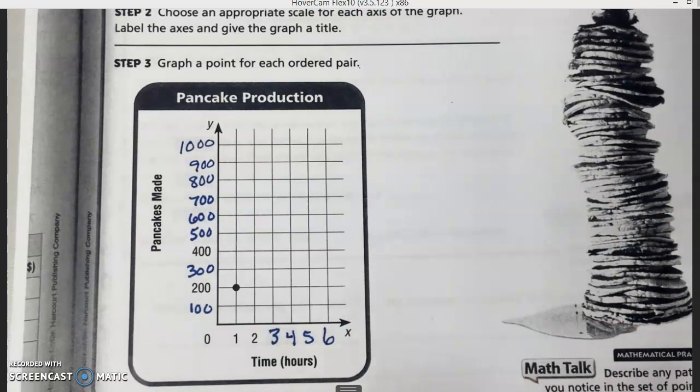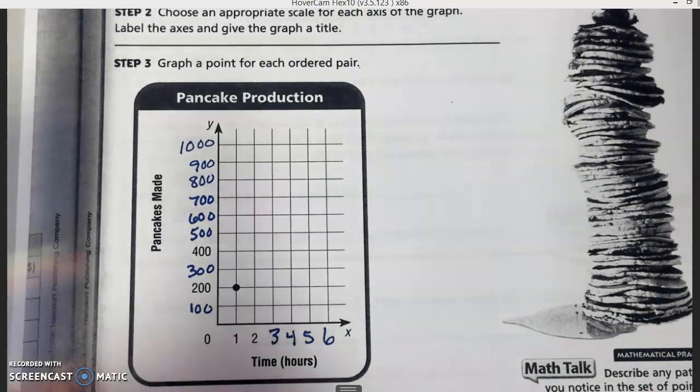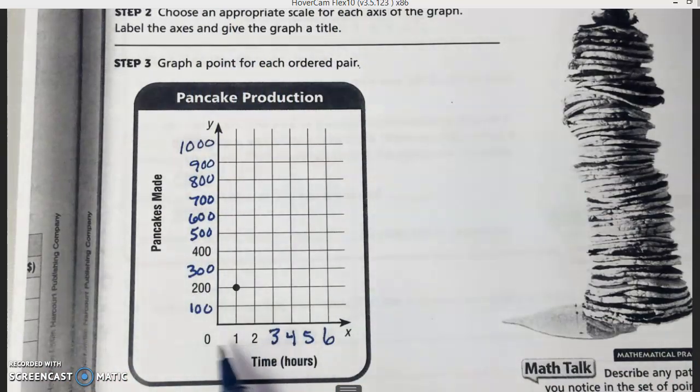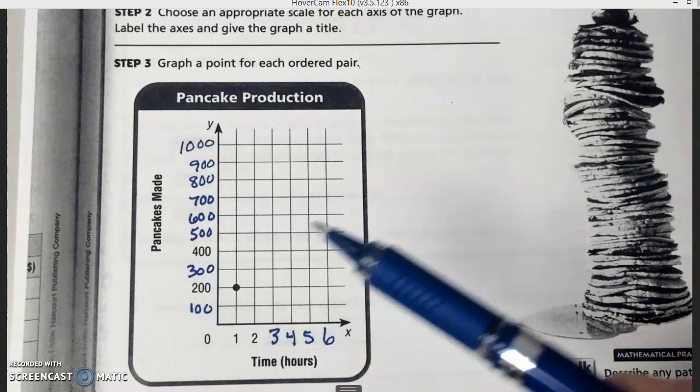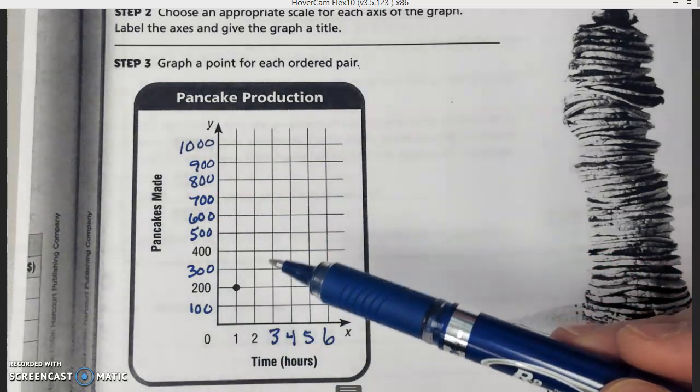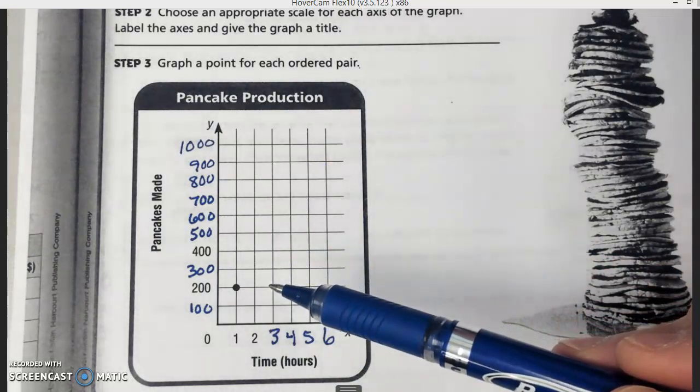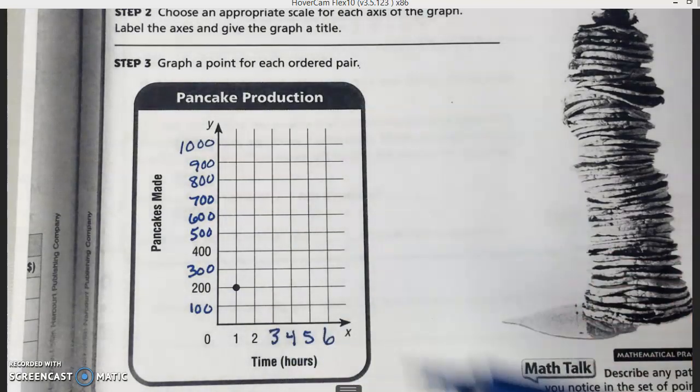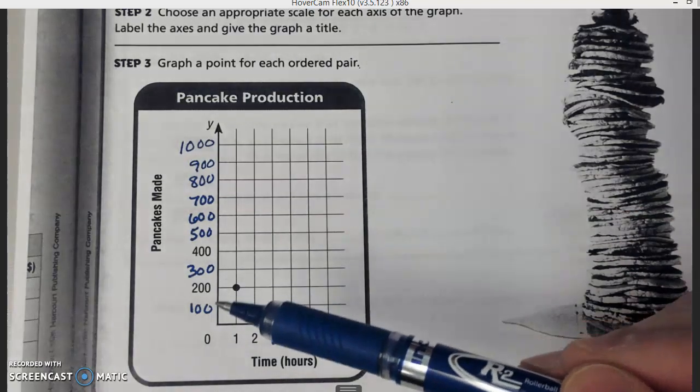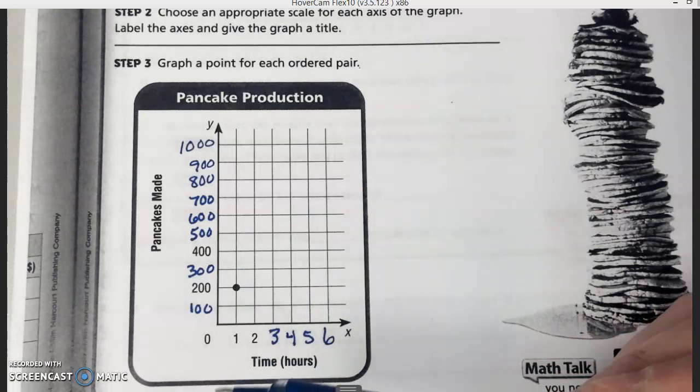When it said that we had to choose an appropriate scale, on the bottom, it made sense to go by ones, right? Because our time went by ones. And over here on the side, it made sense to go by hundreds, since it's counting by two hundreds when we actually graphed. And we had room to go by hundreds. If we hadn't had room, we could have gone by two hundreds.